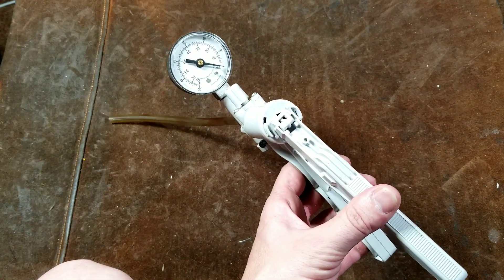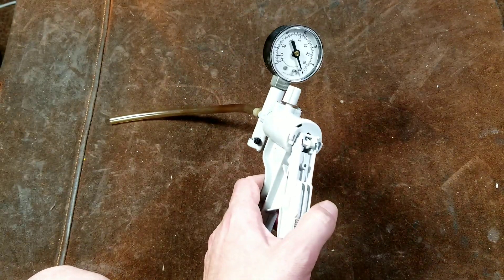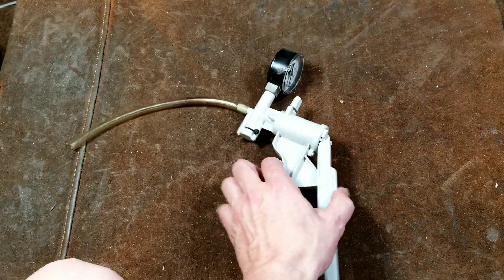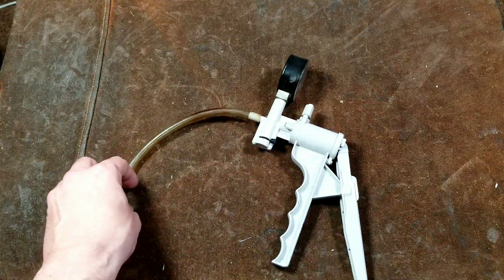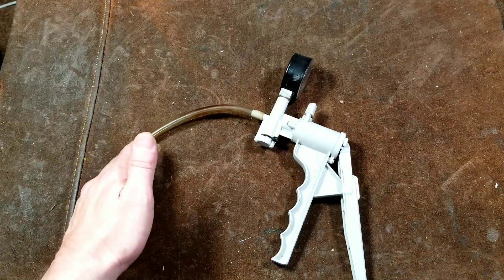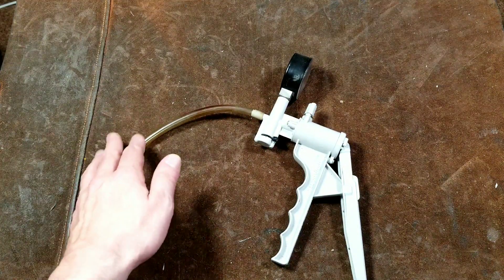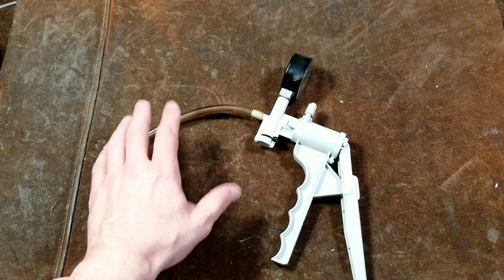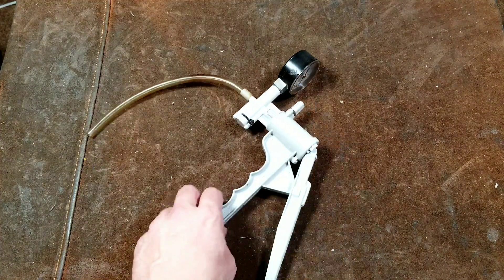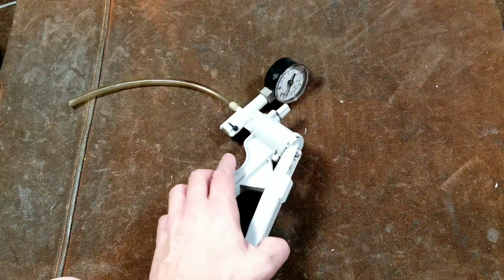When you buy these new, they do come with a kit with various different fittings to hook this up to various different kinds of hoses for automotive testing, as well as a bottle for brake bleeding. These things are pretty handy and they can be used for more purposes than just automotive.